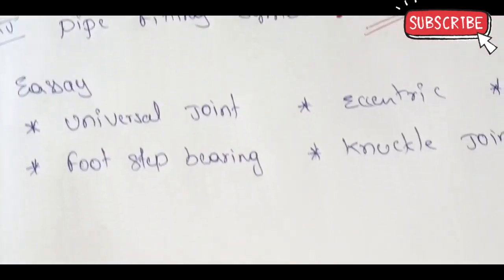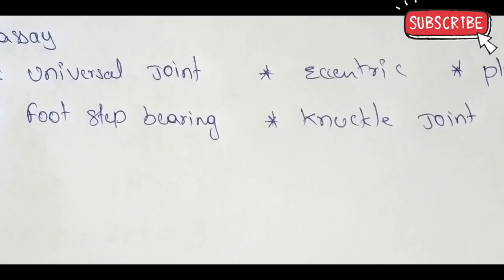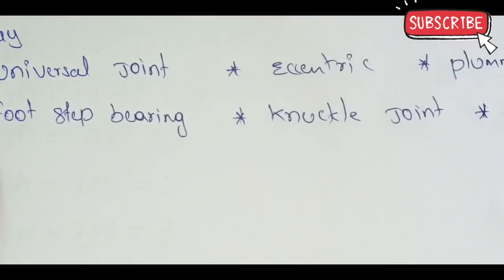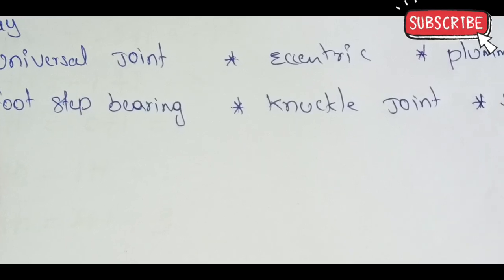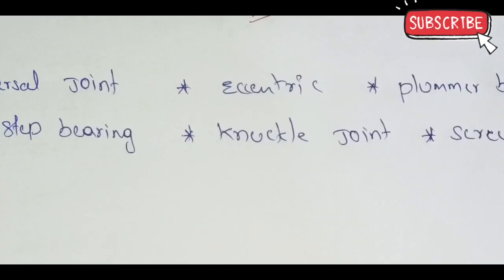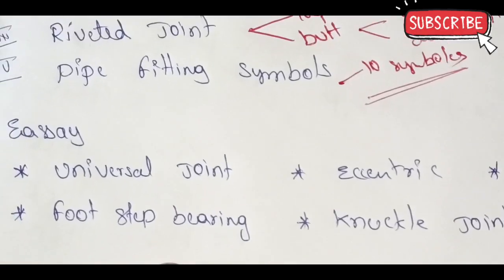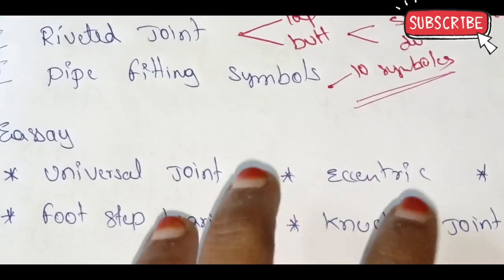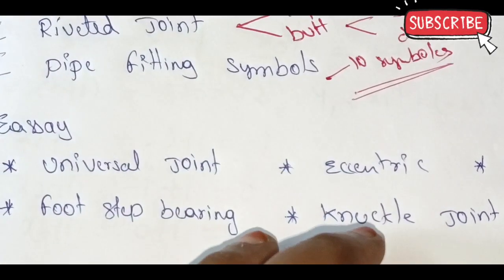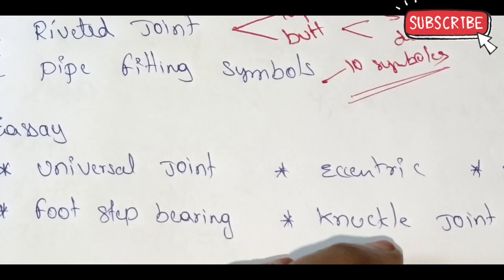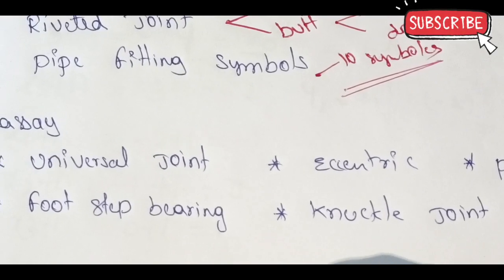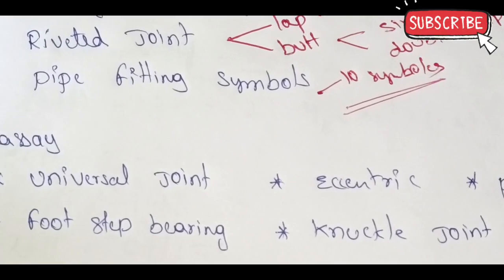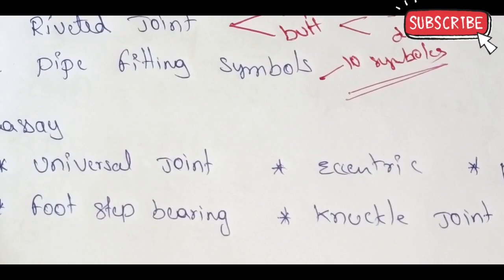Next we discuss: universal joint, eccentric plummet block, foot strap bearing, knuckle joint, screw joint, screw jack. Most important - repeated questions. Here assembly drawing: draw parts, separate components. The paper references C20, C69, C20, C23, C14.